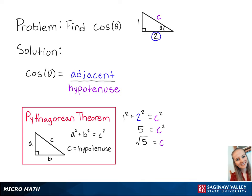Now that we have solved for the length of the hypotenuse, we can see that cosine of theta is equal to 2 over the square root of 5.